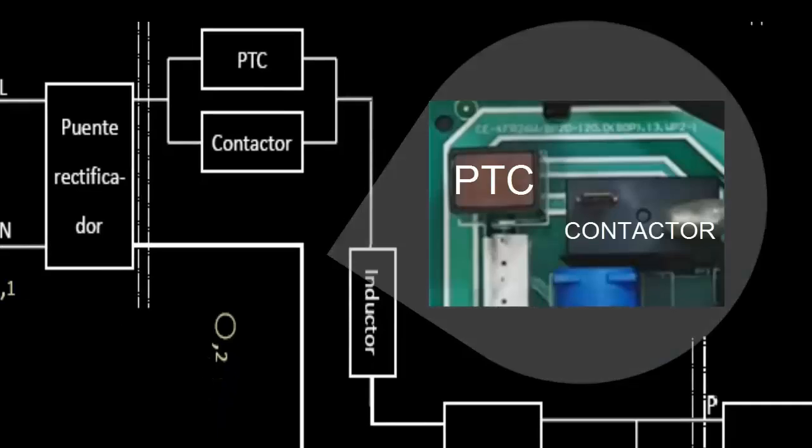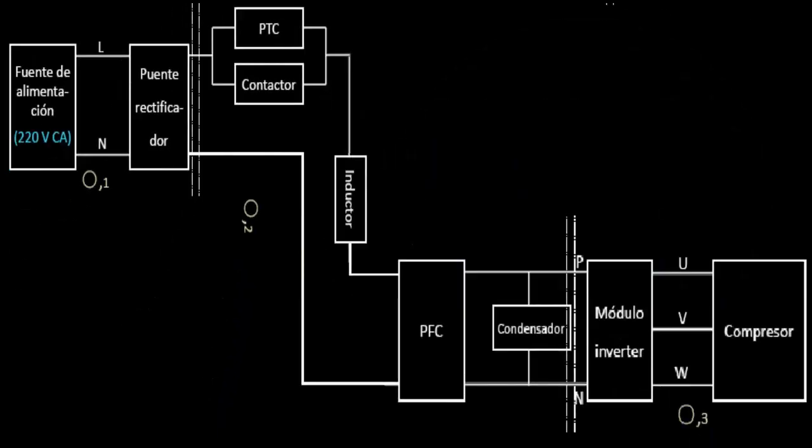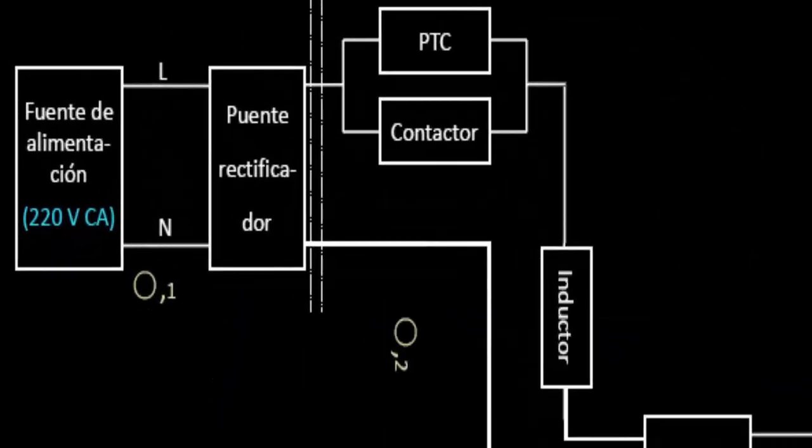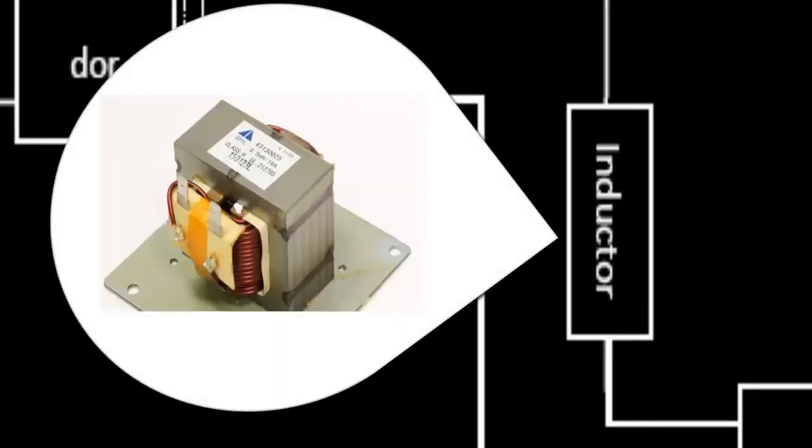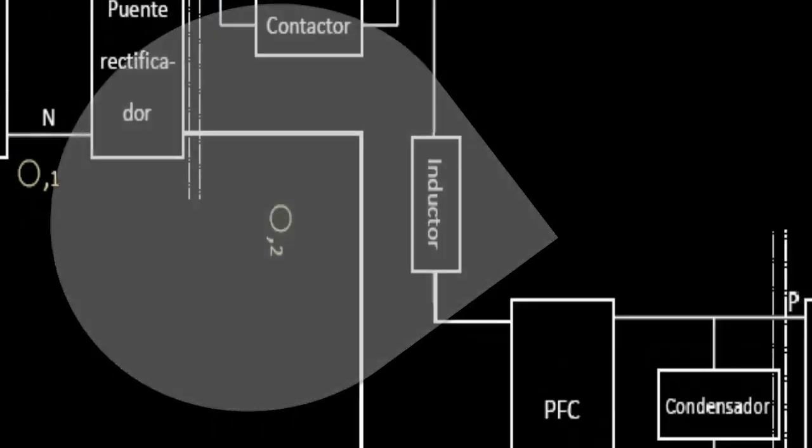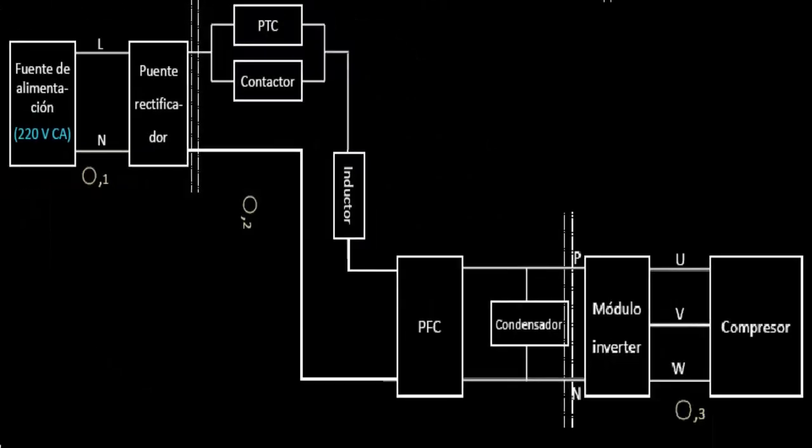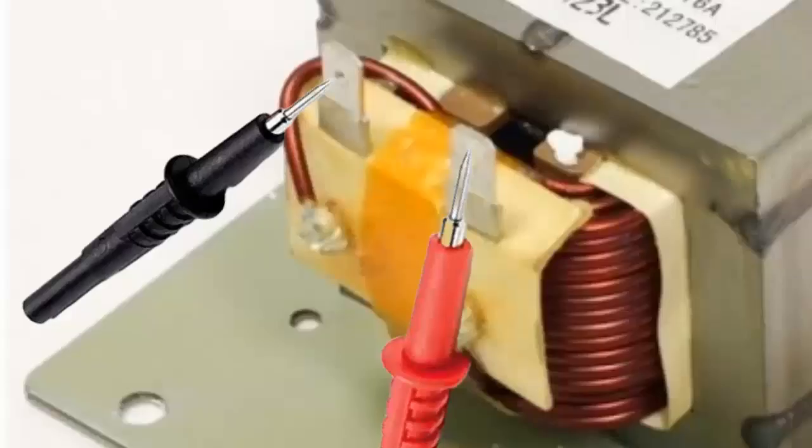Point 6: The inductor limits the current, filters noise, stores energy, and manages the phase difference between voltage and current, improving the system's efficiency and reliability. To diagnose the inductor, disconnect it and measure its electrical continuity with a multimeter.